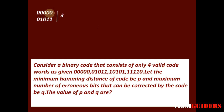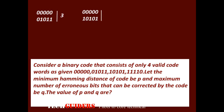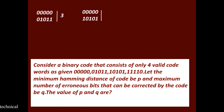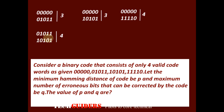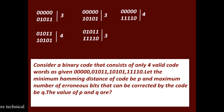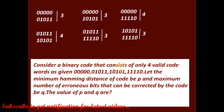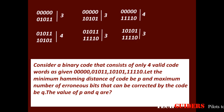The Hamming distance between the first and second codeword is 3. The Hamming distance between the first and third codeword is also 3. The first and fourth codeword have a Hamming distance of 4. The second and third codeword differ by 4. Second and fourth is 3. Finally, the third and fourth codeword have a Hamming distance of 3.